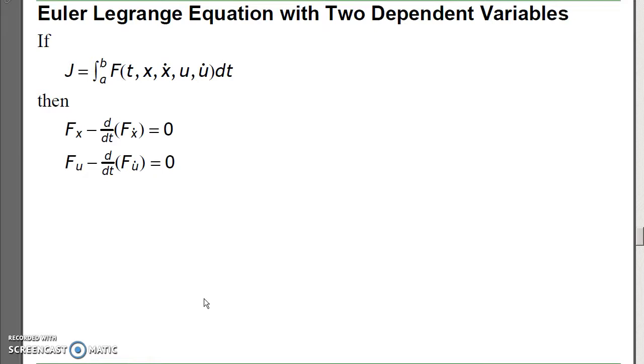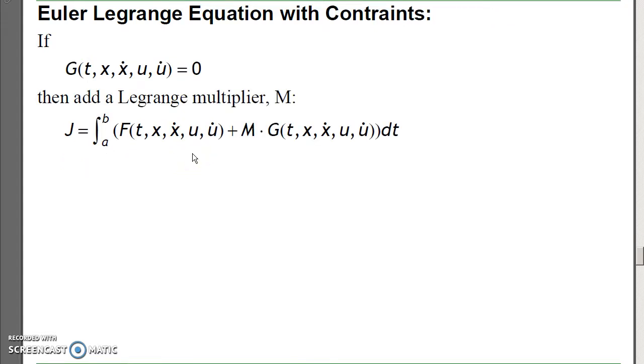Third example. If you have an Euler-Lagrange equation with two dependent variables, it turns out the solution is the Euler-Lagrange equation has to be satisfied with respect to x and with respect to u. Another variation, if there is a constraint, what you do is add a Lagrange multiplier. Since this function equals 0, you can always add 0 to a function and not change it. So I'll just say Lagrange multiplier m times 0, meaning g. And I'll now have three Euler-Lagrange equations, one with respect to x, one with respect to u, one with respect to m.